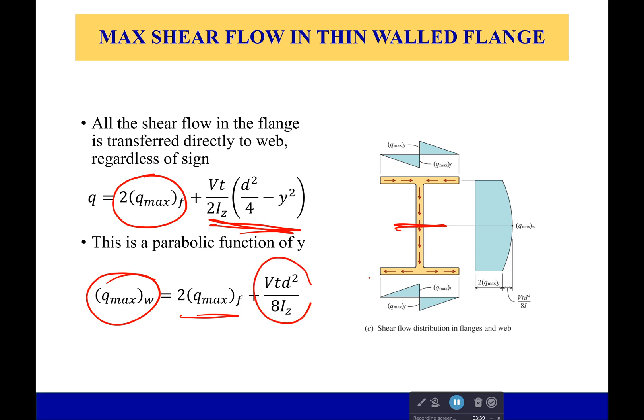So plug in zero for y and we get the max shear flow in our web is equal to twice the max shear flow in our flange plus this term.